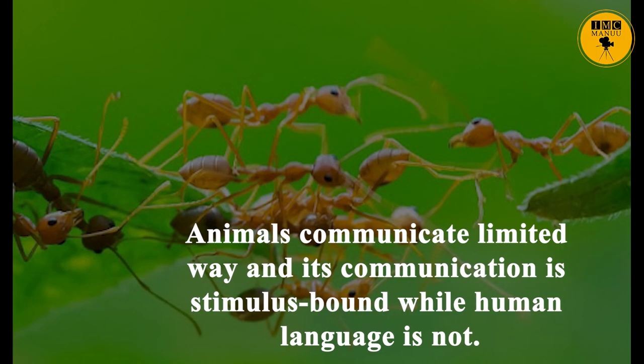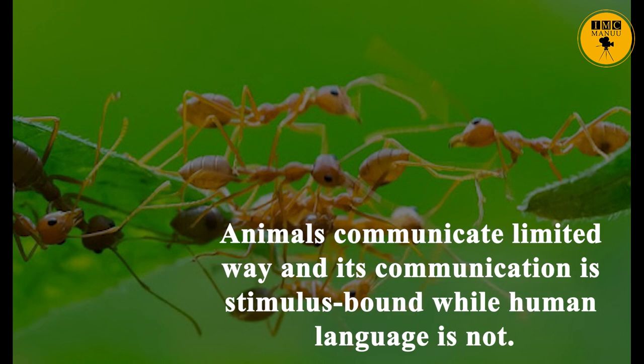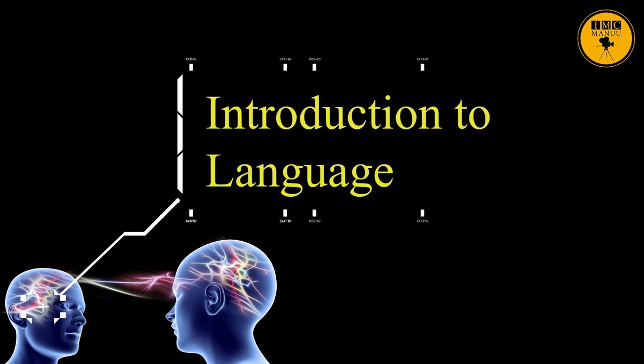Let me highlight how human language differs from other communication. The claim that language is human-specific implies that certain characteristics of human language are not found in any other species. Animals communicate in a limited way, and their communication is stimulus-bound, while human language is not. Experiments to teach animals more complicated systems have a history of failure. Before we discuss more specifications of the difference between animal communication and human language, let me highlight some definitions of language.